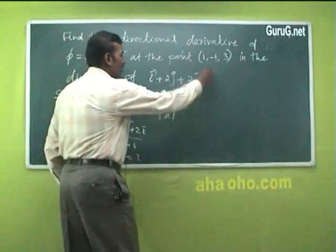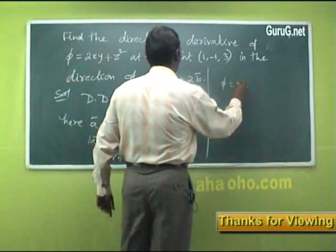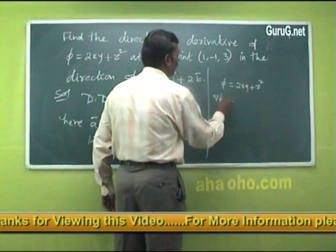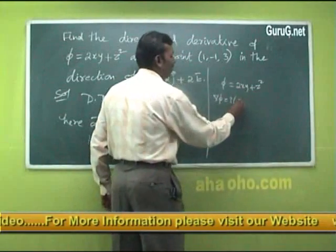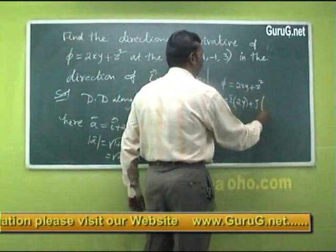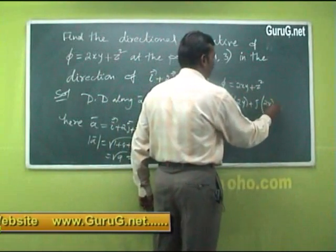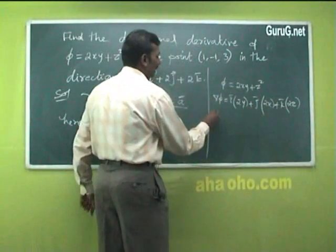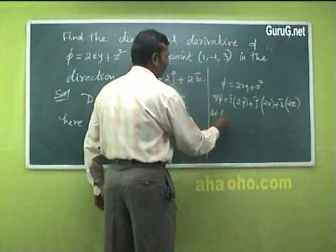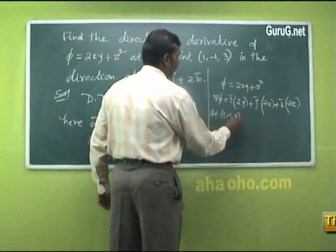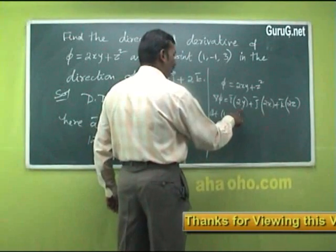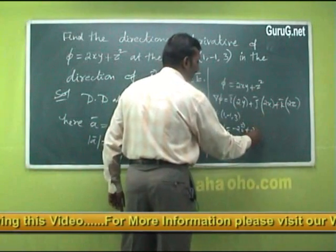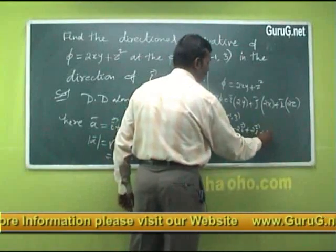Compute del φ where φ = 2xy + z². Del φ = i·(∂φ/∂x) + j·(∂φ/∂y) + k·(∂φ/∂z) = i·(2y) + j·(2x) + k·(2z). At the point (1, −1, 3): del φ = i·(−2) + j·(2) + k·(6) = −2i + 2j + 6k.